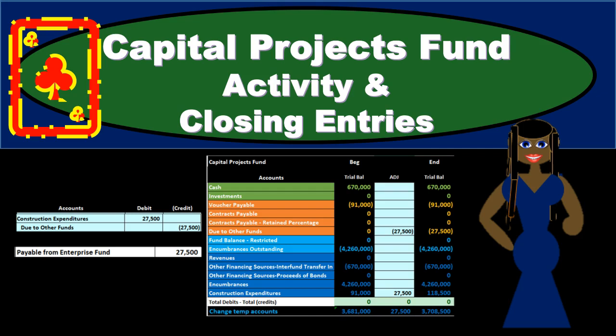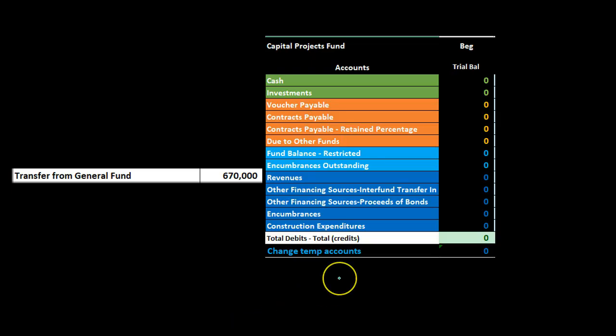In this presentation we will look at an example problem related to the capital projects fund. We're going to enter transactions and do the closing process for the capital project fund. Our information will be on the right side as a trial balance, recorded in order by assets, then liabilities, then the fund balance section, and then the temporary accounts that close out to the fund balance section.